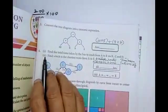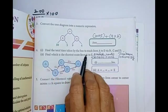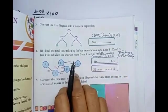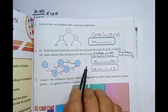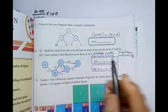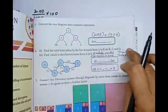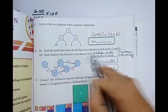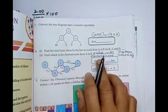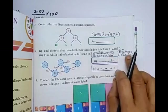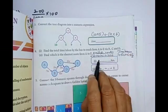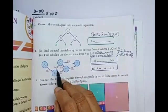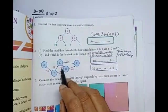Next, fourth one. Find the total time taken by the bus to reach from A to E via B, C and D. Total time means what? A to E. Total time. You put available route. Here, time taken. A to B, 7 hours. 7 plus. B to C, 5 hours. Next, C to D, 3 hours.